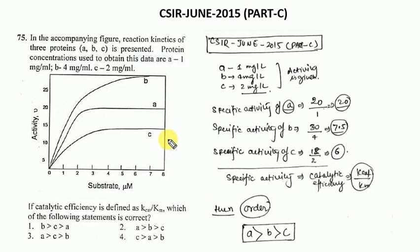They asked if the catalytic efficiency is defined as Kcat by KM. You don't know where Kcat and KM is, you won't solve this question. I have told you before that catalytic efficiency is also known as specific activity. We can calculate specific activity in two ways: one is Kcat by KM, the other is activity divided by the amount of enzyme in milligrams. Let's see how we solve this question.